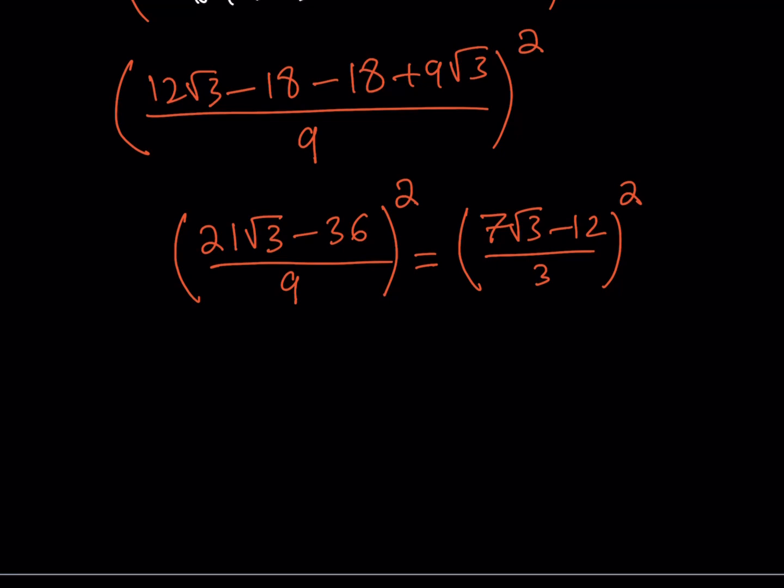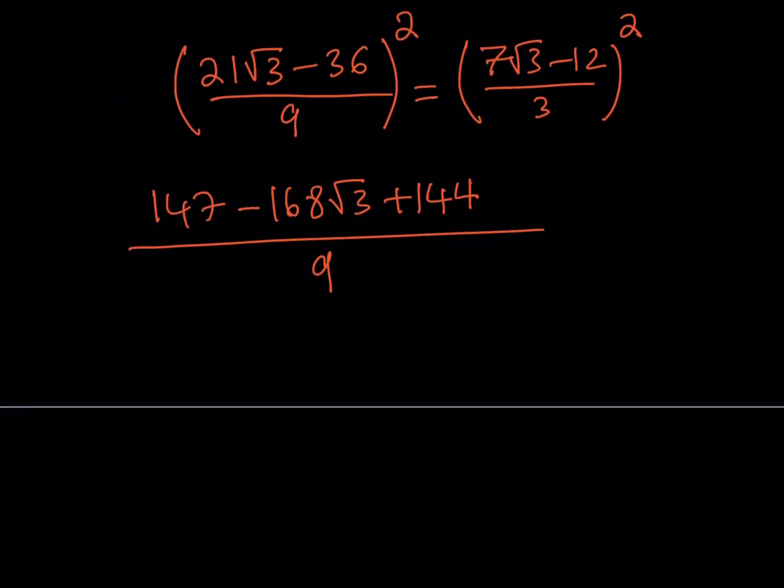7 root 3 squared is going to be 49 times 3, which is 147, minus their product is going to be 84 root 3, but double that, 168 root 3, plus 12 squared is going to be 144. Okay. And then all over 9. Obviously, what you can do is you can just go ahead and add these two quantities up. That's going to give you 291. Okay.